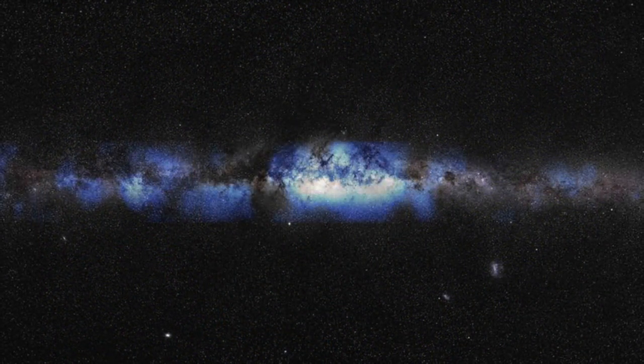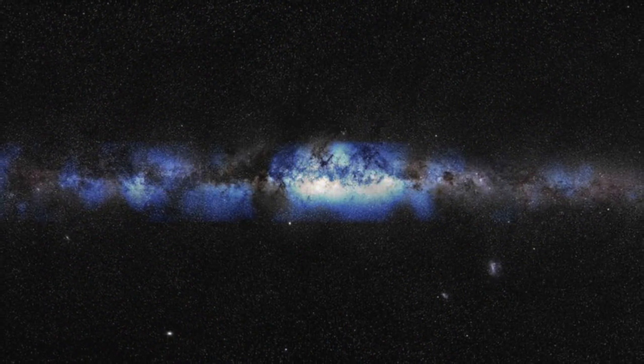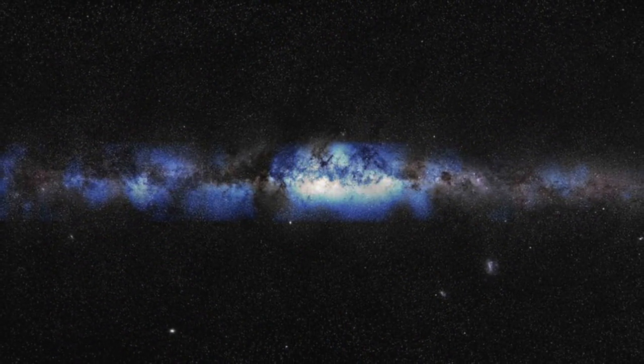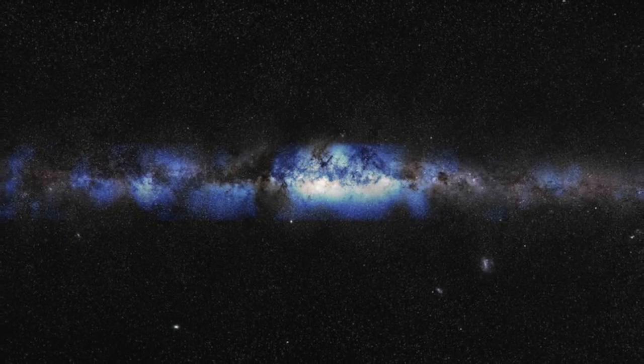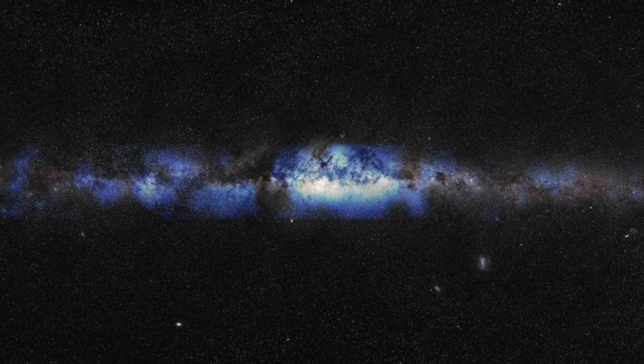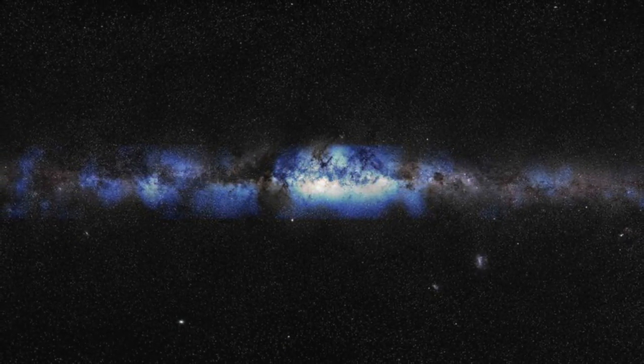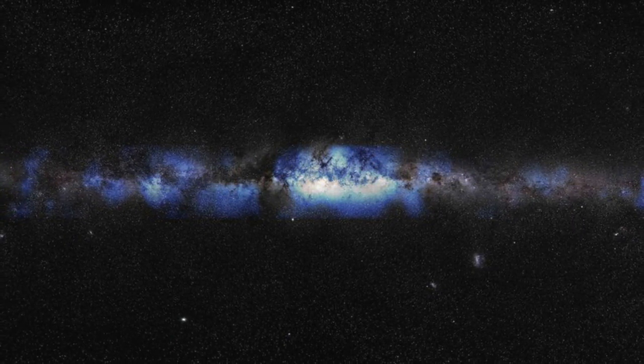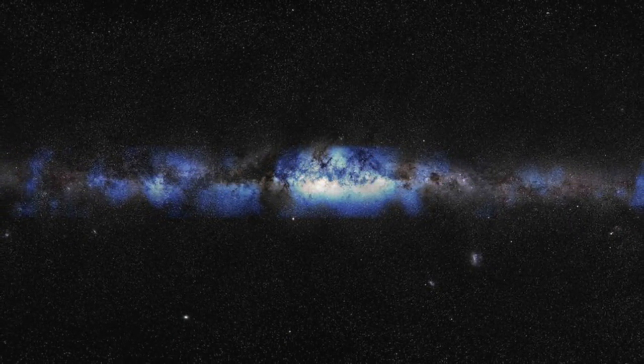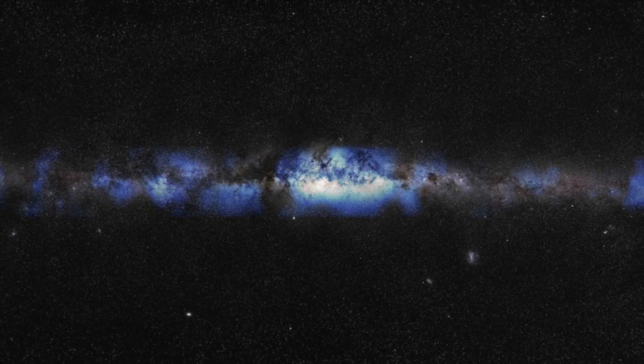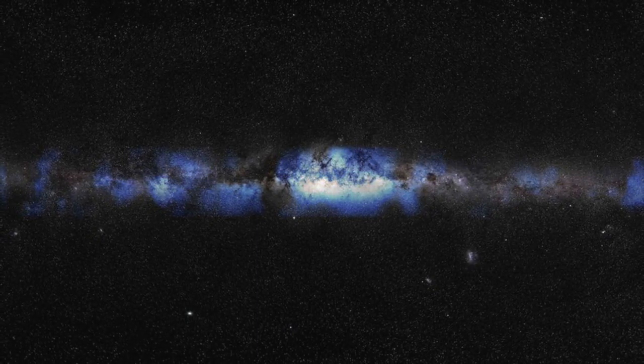As a result, scientists have been able to build up a neutrino image of the Milky Way. This is the first time that we've been able to see our galaxy using particles other than photons of light. The image shown here is a combination of visible light and neutrino emissions, which appear in blue.